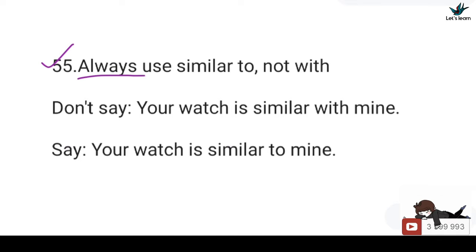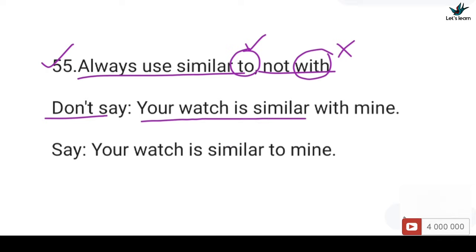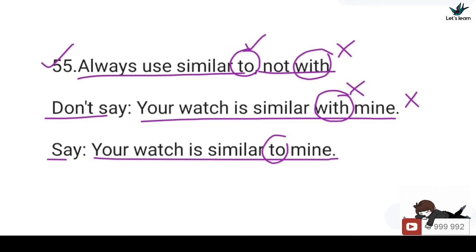55. Always use 'similar to', not 'with'. You should not say: Your watch is similar with mine — 'with' after 'similar' is incorrect. You should say: Your watch is similar to mine — 'to' after 'similar' is correct.